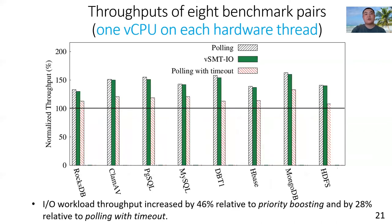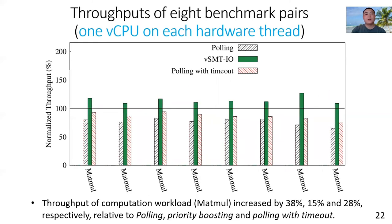On average, with vSMTIO, IO workload throughput is 46% higher than priority boosting and 28% higher than polling with timeout. This shows vSMTIO can effectively improve IO throughput. On average, with vSMTIO, throughput of matrix multiplication is 38%, 15%, and 28% higher than with polling, priority boosting, and polling with timeout, respectively. This shows vSMTIO can improve IO efficiency.